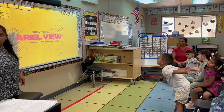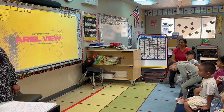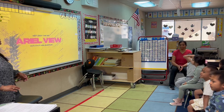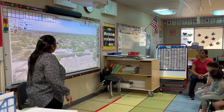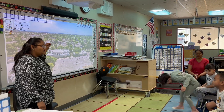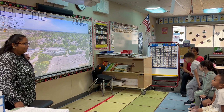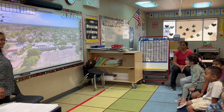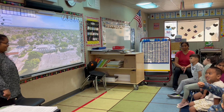Ms. K is going to show you aerial view. Does anybody know what aerial view means? You don't know? So when you go to the sky, like in an airplane or a helicopter, this is how it looks. It looks so tiny, right? So this is an aerial view of our school. Do you remember what place is this? This is music.